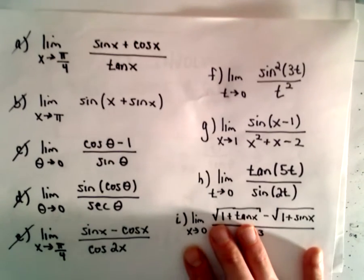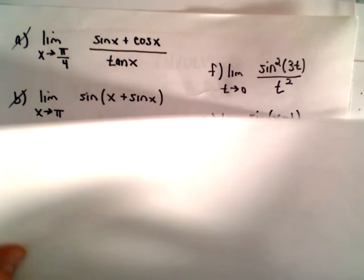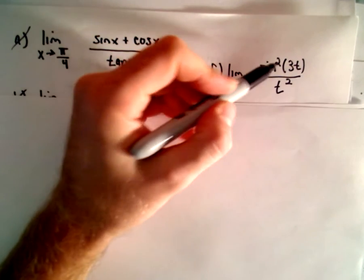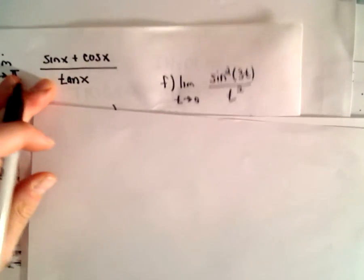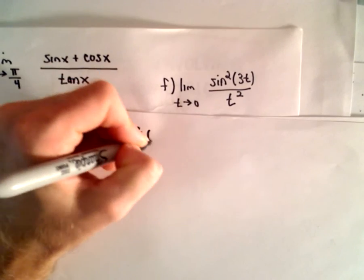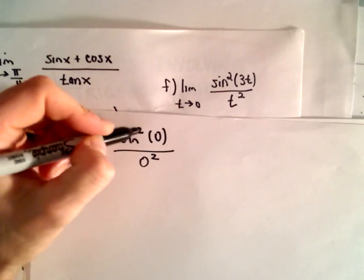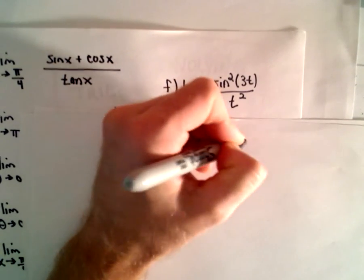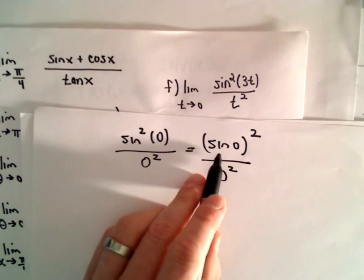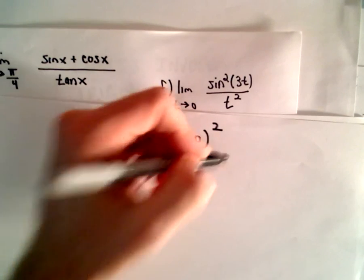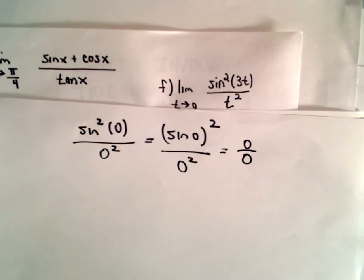So for part F, we've got the limit as t approaches 0 of sine squared of 3t over t squared. Now if you immediately substitute this in, we're going to get sine squared of 0 over 0 squared. Sine squared of 0 is just sine of 0 squared — sine of 0 is 0, so if we square it, we've still got 0 over 0. So we have our indeterminate form.